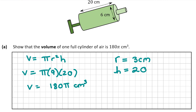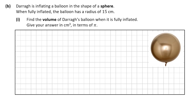That's question A done, and for this question you're going to get a total of 5 marks. Now let's move on to question B. In question B, we're told that Dara is inflating a balloon in the shape of a sphere, so we've moved on from cylinders to spheres. When fully inflated, the balloon has a radius of 15 centimeters. We're asked to find the volume of Dara's balloon when fully inflated.